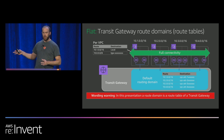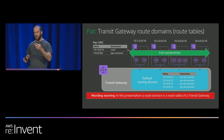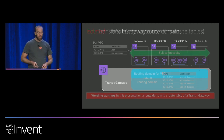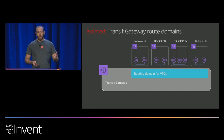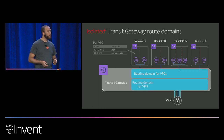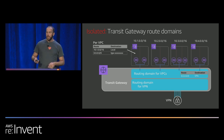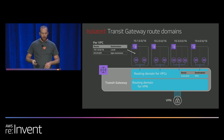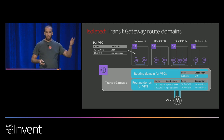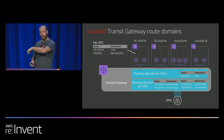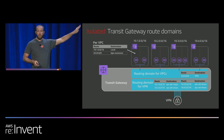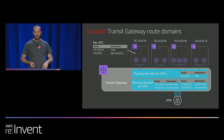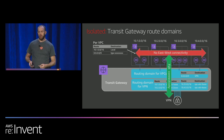I use route domains and route tables interchangeably — sometimes it's easier to say route domains because VPCs and transit gateways both have route tables. For the isolated model, we have the same VPCs but only one route — we don't want them to talk to each other, only to VPN. We create another route table for VPN, attach VPN to that route table, and propagate the VPN routes to the VPC route table. You can notice that even though we have four VPCs, they're attached to the same route table, whose policy says the only thing you're allowed to do is go to VPN. So these VPCs can't talk to each other, but they can reach on-premises.